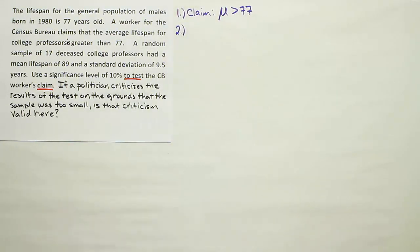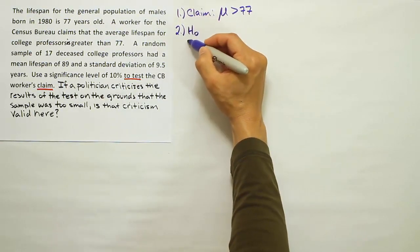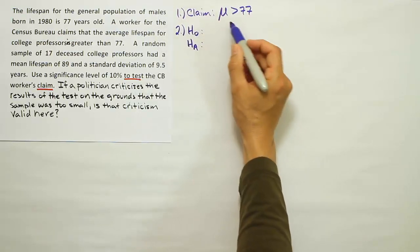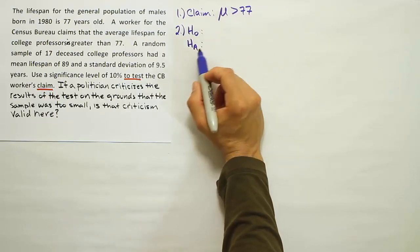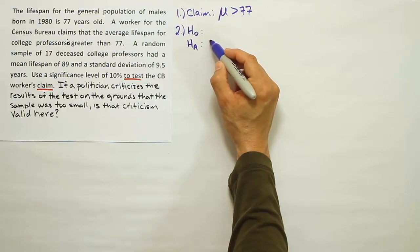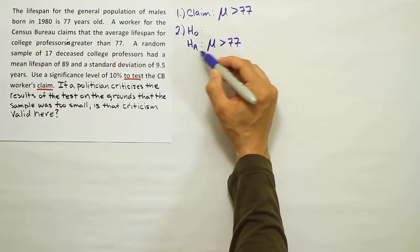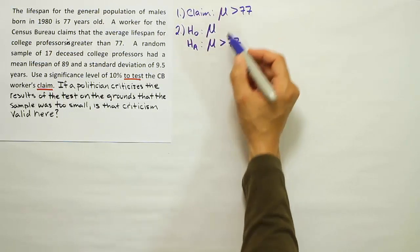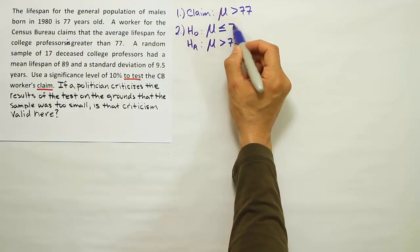Once you identify the claim, you want to get your competing pair of hypotheses. That's H0 and HA. The claim uses the symbol greater than. That's one of HA's symbols. That means that HA is the same as the claim in this instance. So the mean is greater than 77 is our HA. And H0 will have to be the opposite of that. If the mean is not greater than 77, it must be less than or equal to 77.